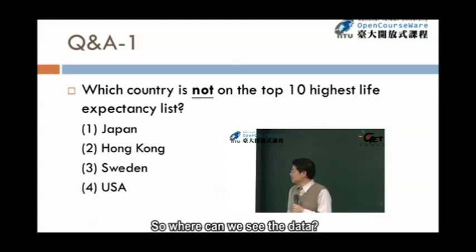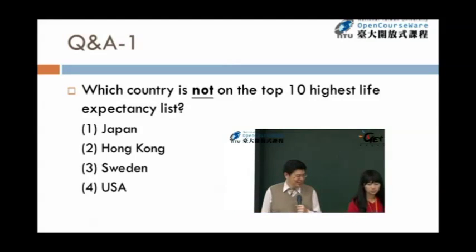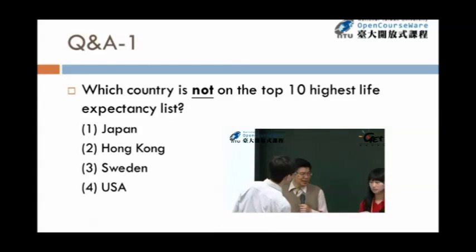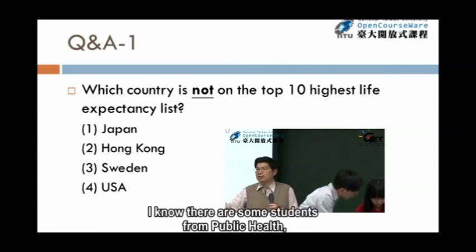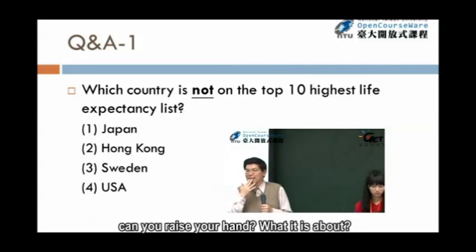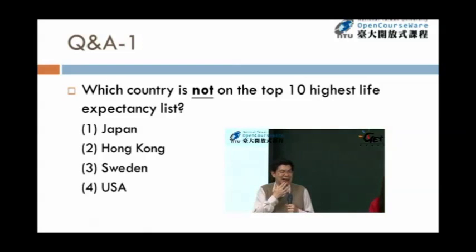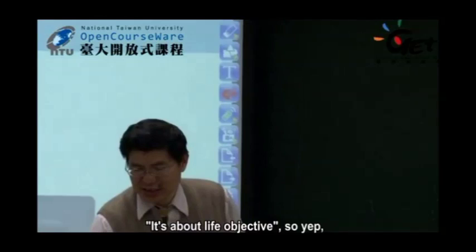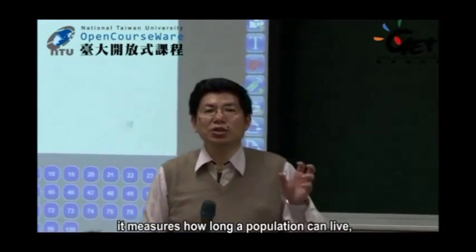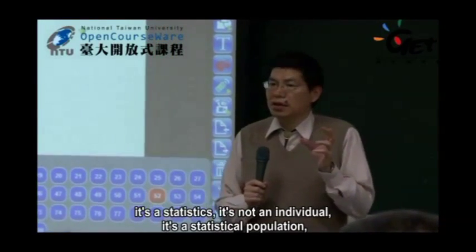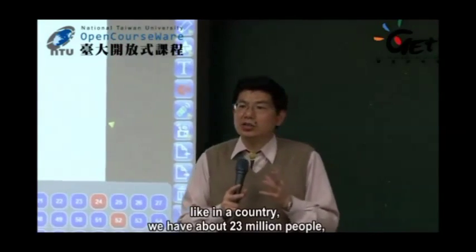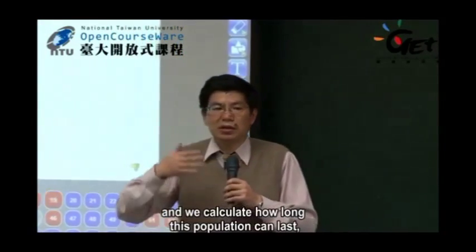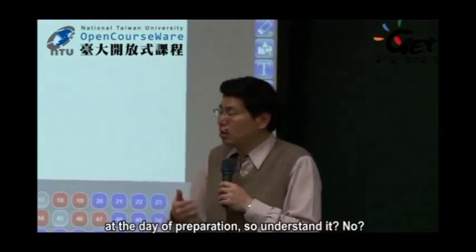So where can we see the statistics? You will know what life expectancy is about. It measures how long a population can live — it's a statistic, not about an individual. It's a statistical population measure. When we talk about population, we mean a group of people. Like in a country, we have about 23 million people, and we calculate how long this population can last at the time of calculation.